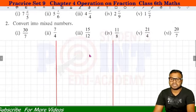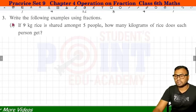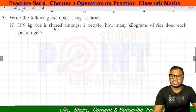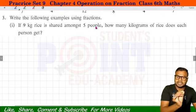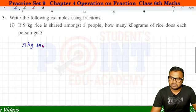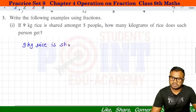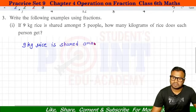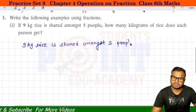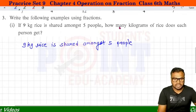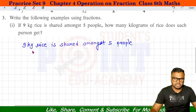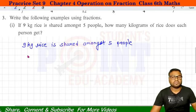Question Number 3: Write the following example using fraction. If 9 kg rice is shared among 5 people, how many kg of rice does each person get? 9 kg rice 5 लोगों में बाँटा गया। इसका मतलब 9 को 5 से divide करना — 9 divide by 5।